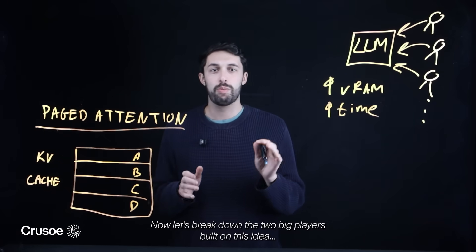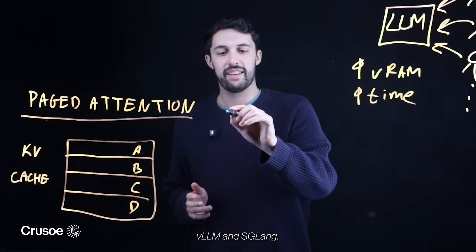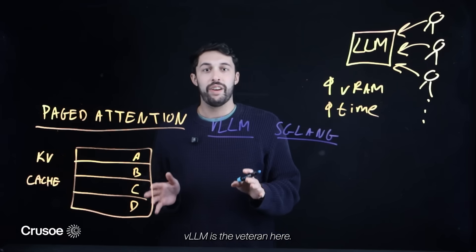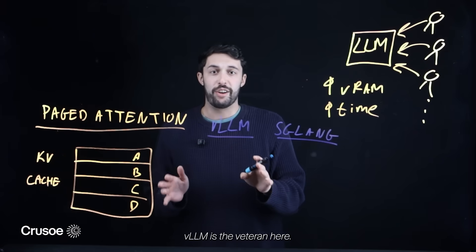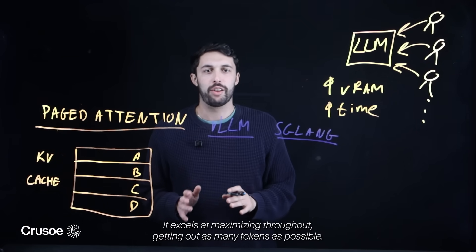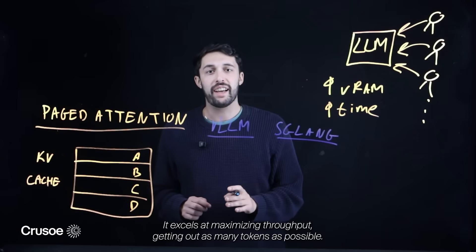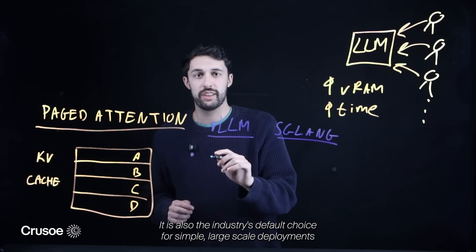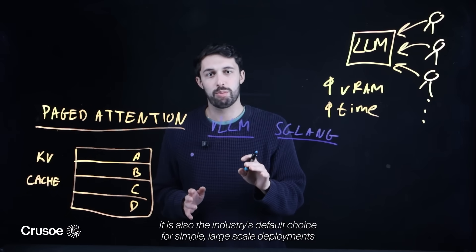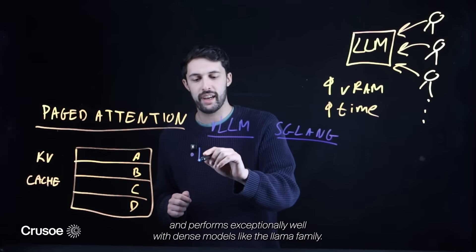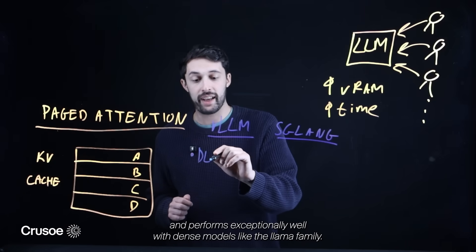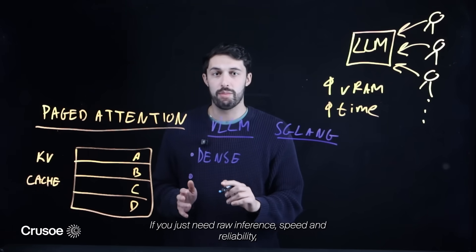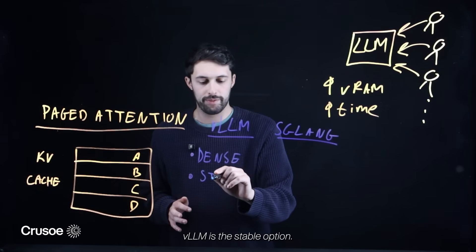Now let's break down the two big players built on this idea: VLLM and SGLang. VLLM is the veteran here. It excels at maximizing throughput, getting out as many tokens as possible. It is also the industry's default choice for simple, large-scale deployments and performs exceptionally well with dense models like the LLAMA family. If you just need raw inference speed and reliability, VLLM is the stable option.